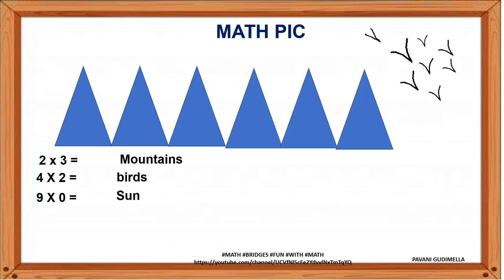9 into 0 sun. They should recall the concept of 0 over here and that many sun they have to draw. 5 into 2 stars. 5 times 2 are how much? Let the child write the product and that many stars they can draw it in their book.